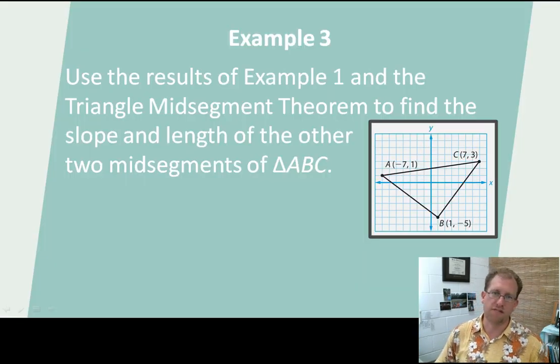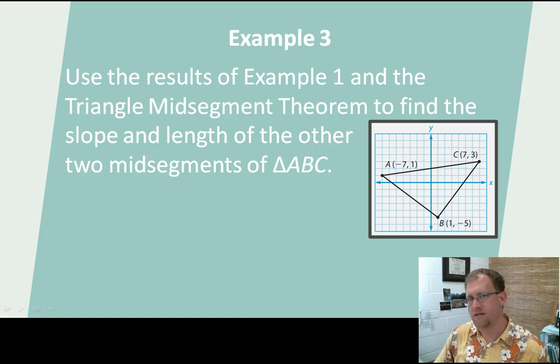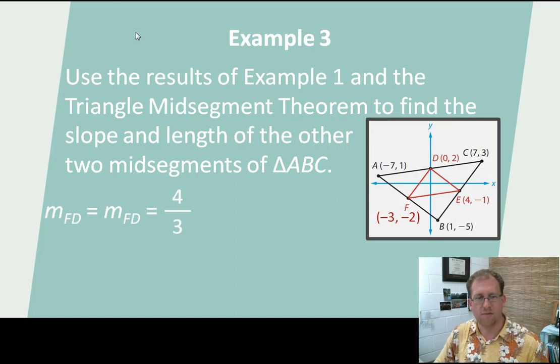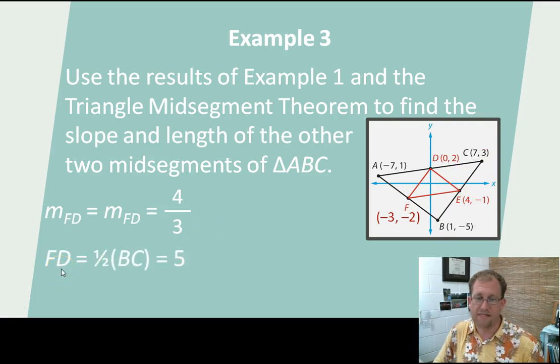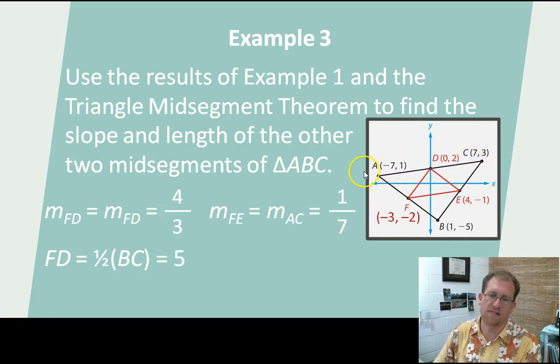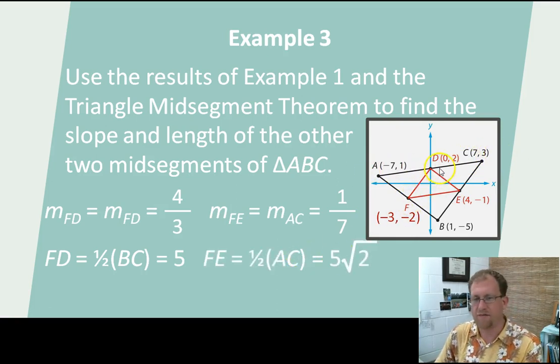Now we can go back and use what we discovered about this triangle already. We can determine the length and slope of other mid-segments pretty easily because we know that they're going to be half as long and they're going to be parallel to. The slope of FD, this mid-segment, is going to be four-thirds because it's parallel to this. And the distance from F to D is going to be half of the distance of BC, which was 10, so that's five. The slope of FE is going to be parallel to the slope here, which was one-seventh. And the distance is going to be half of this. This was 10 radical 2, this is now 5 radical 2.